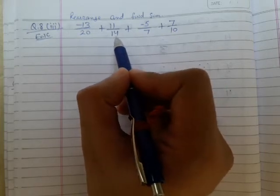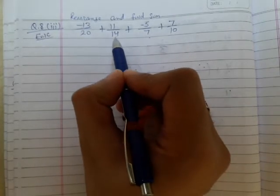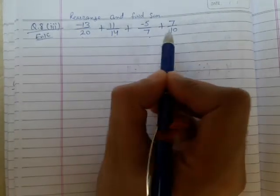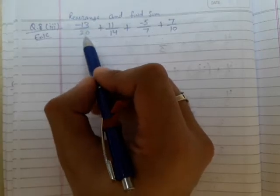Here, 14 is a multiple of 7, so I can group 11/14 and -5/7 together. Also, 20 is a multiple of 10, so I can group -13/20 and 7/10 together.